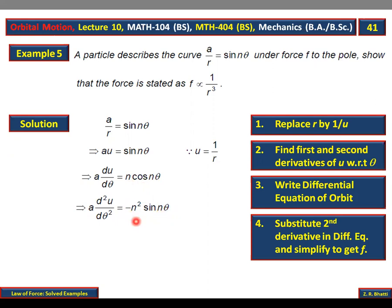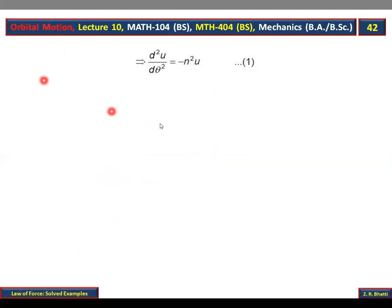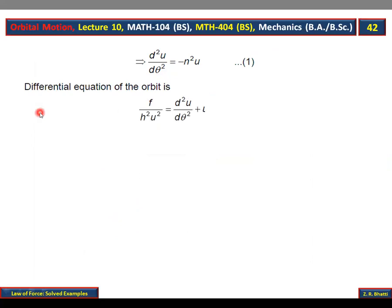Ab simplify karna hai, kyunki aap jante hain ke sin n theta = a*u (since a over r = sin n theta). To sin n theta ki jagah a*u likhte hain. Phir a cancel ho jaata hai, aur d square u over d theta square equal to minus n square u aa jaata hai. Ab differential equation of the orbit likhne ka waqt hai: f over h square u square is equal to d square u over d theta square plus u.